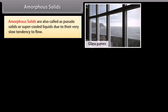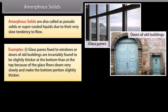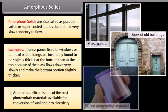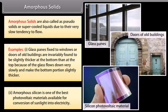Amorphous solids are also called as pseudo solids or super cooled liquids due to their very slow tendency to flow. Examples: Glass panes fixed to windows or doors of old buildings are invariably found to be slightly thicker at the bottom than at the top because the glass flows down very slowly and makes the bottom portion slightly thicker. Amorphous silicon is one of the best photovoltaic materials available for conversion of sunlight into electricity.